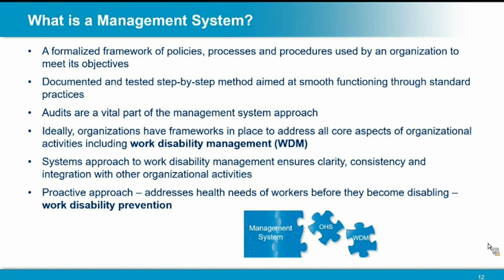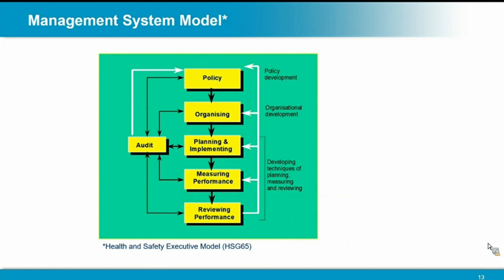The framework has to fit together with the existing management system. The health and safety standard Z1000 is already in place and there's an ISO equivalent, and we're bringing in the work disability management system standard to that framework. Management systems modeling shows: policies at the top identify how the organization develops and operates; there's a planning process and implementation of new policies and programs; measurement and performance evaluation through audits and reviews takes you back to reassessing the next cycle of targets — that's the continual improvement process.